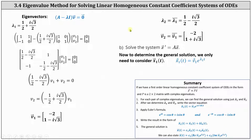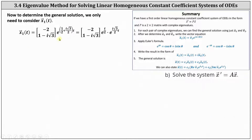To determine the general solution, we only need to consider x one of t, where x one of t equals v one times e to the power of lambda sub one t. This gives us x one of t equals eigenvector v one times e to the power of one half plus i square root three divided by two times t. Before applying Euler's formula, we write the exponential as e to the power of t divided by two times e to the power of i square root three divided by two times t.